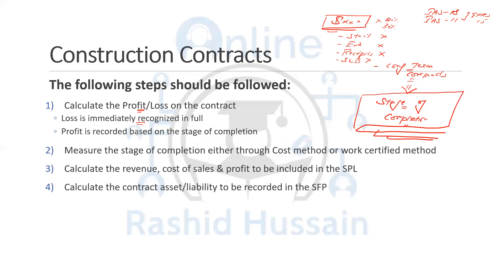We recognize the loss immediately because it's an application of the prudence concept. When you have profits, income, or gains, you're not going to record them unless and until you have earned them. But when it comes to losses, you record them immediately — loss is never unrealized, loss is always realized. So when you have a profit, it is recorded based on the stage of completion; when it is a loss, that loss should be immediately recognized.